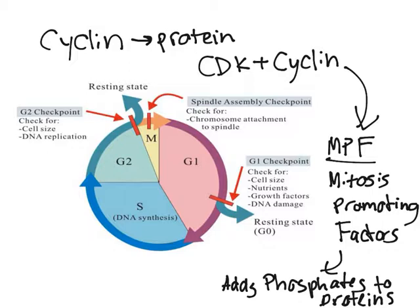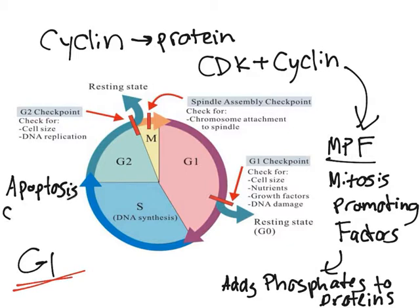To sum up: the most important checkpoint is G1 — it checks the DNA. G2 checks for DNA replication. Remember that apoptosis, which is programmed cell death, can occur at any time during the cell cycle. If the cell discovers that something went wrong, it will most likely undergo apoptosis.